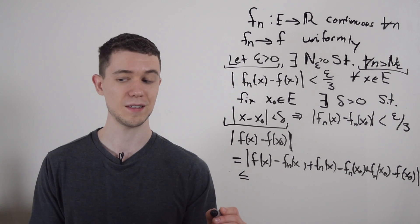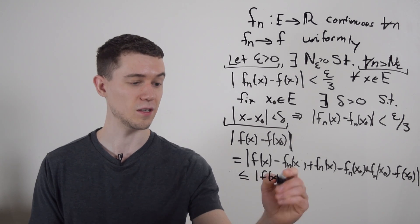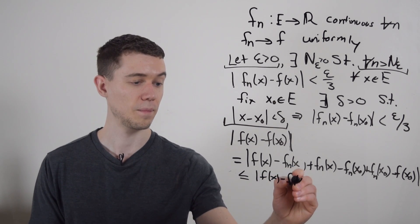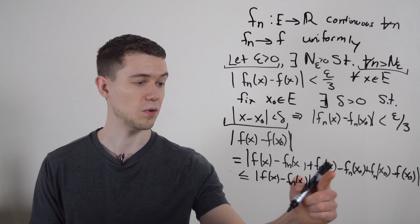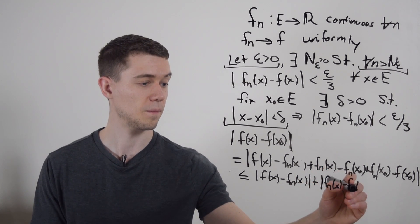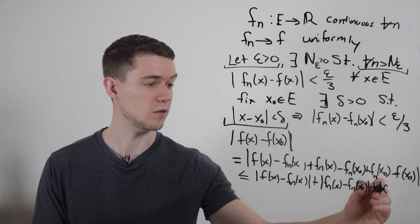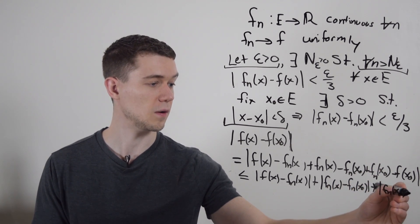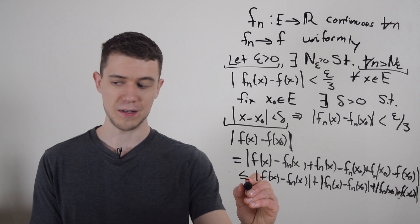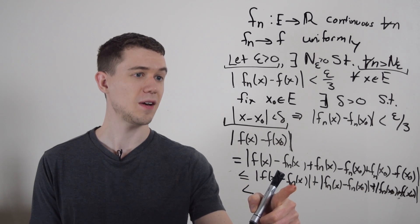So by the triangle inequality, this is less than or equal to, and I'll break it into three parts, I'll break it into this first part, plus I'll break it into the second part. And then I'm plus the absolute value of this, this third part. And so what I have here is I know what all three of these things are bounded by f of x minus f sub n of x.